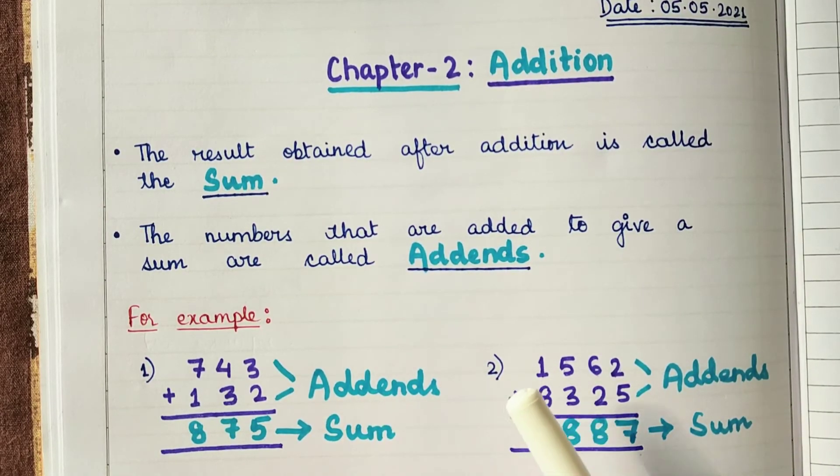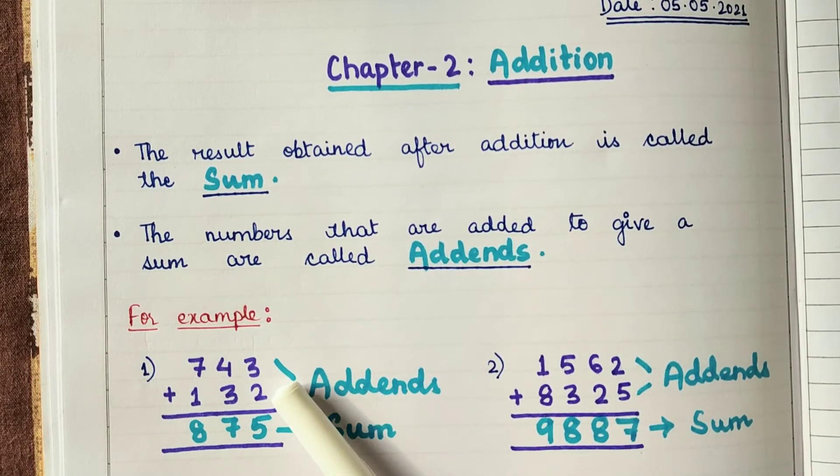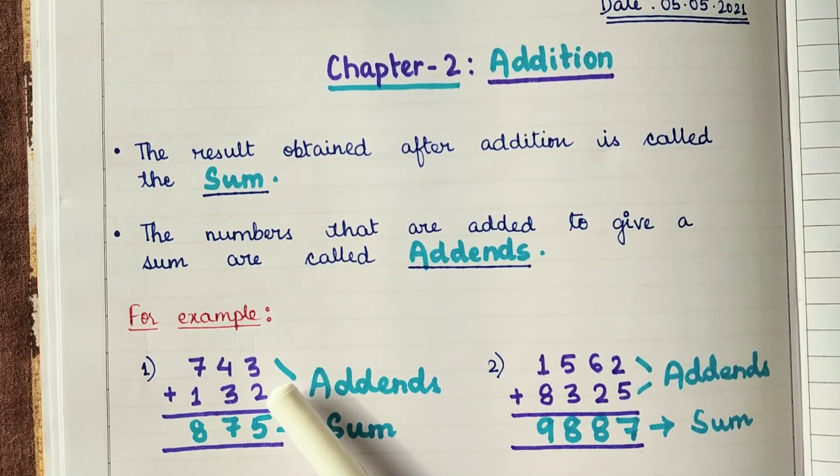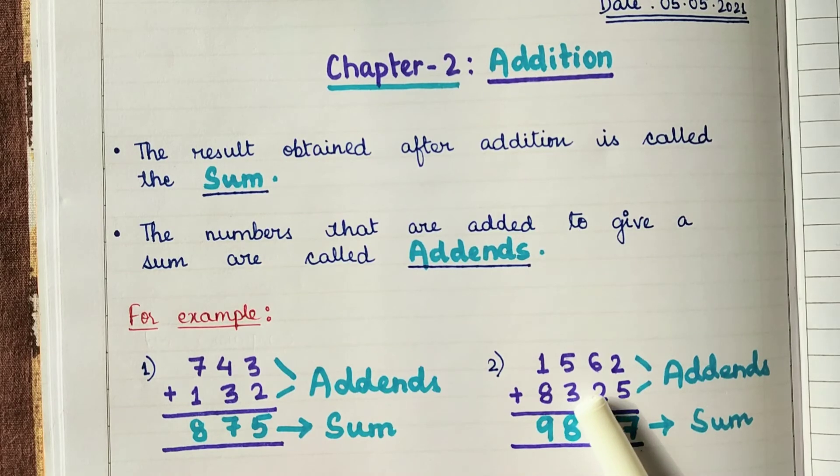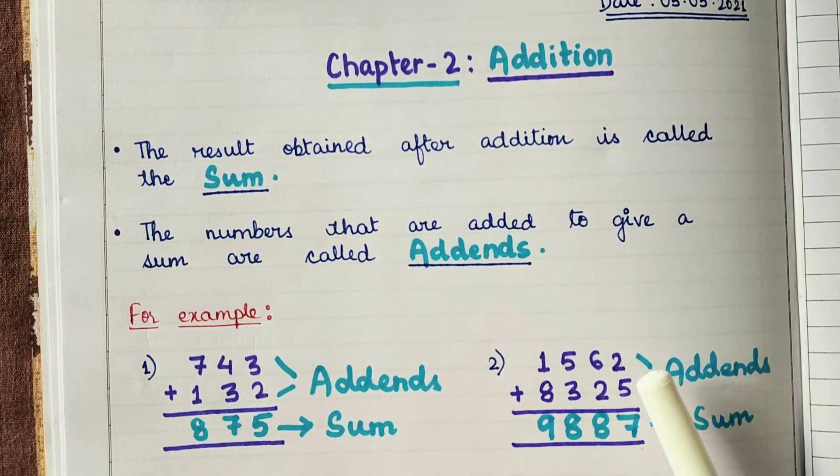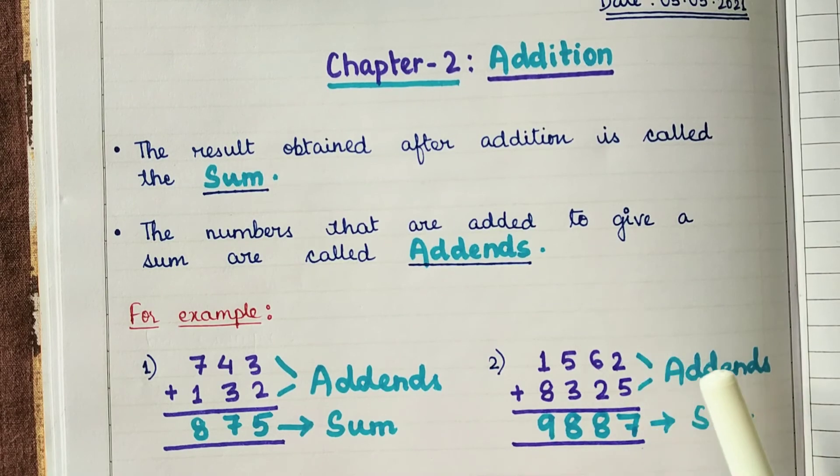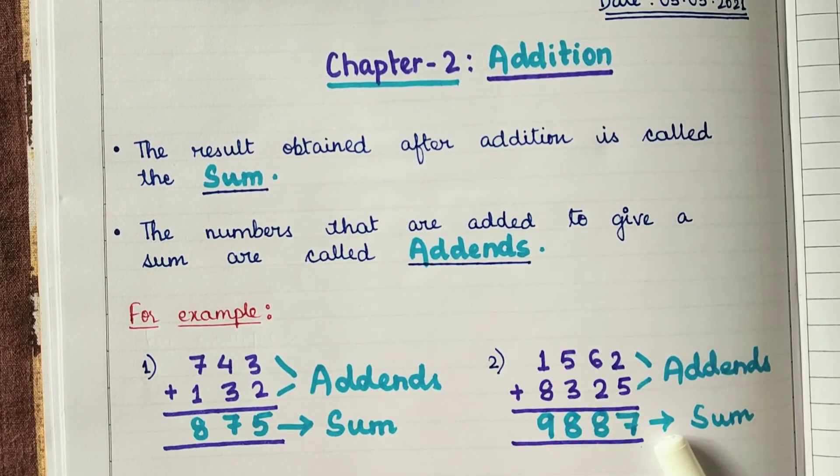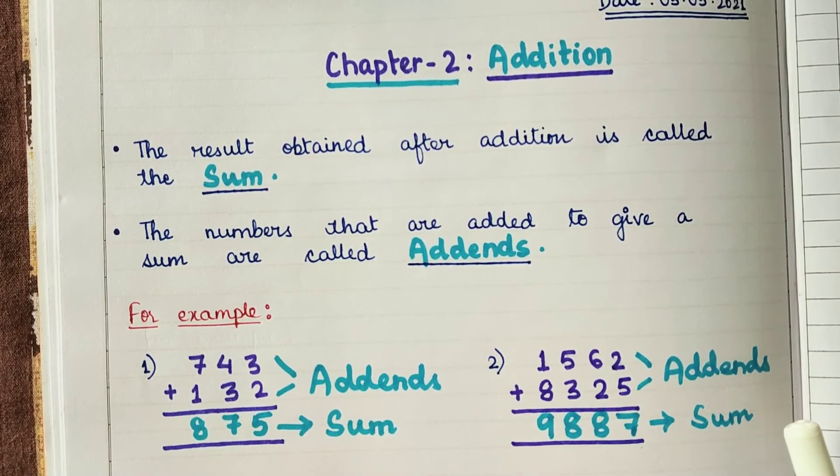Similarly, the same thing is here. Now, this addition was addition of 3-digit numbers and this addition is addition of 4-digit numbers. The numbers which are added are addends and the result which we obtained is the sum.